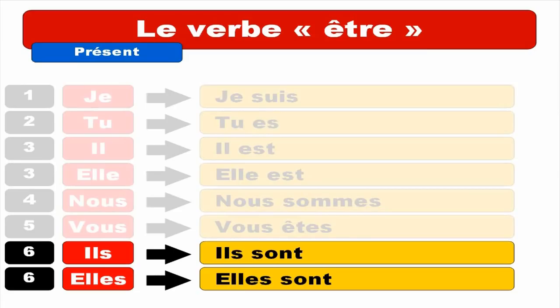One important thing regarding ILS and ELLES: the verb AVOIR (to have) also has this liaison, and the sound for AVOIR is ILS ONT, ELLES ONT. But for ÊTRE it's ILS SONT, ELLES SONT. This S is the only way to dissociate ÊTRE from AVOIR for IL and ELLE, so don't be afraid to pronounce this S quite strongly.